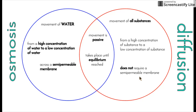Here is a Venn diagram showing the similarities and differences between osmosis and diffusion. Osmosis is the movement of water from a high concentration of water to a low concentration of water across a semi-permeable membrane. Diffusion is the movement of all substances — liquids or gases — from a high concentration to a low concentration, and does not require a semi-permeable membrane. The similarities between the two are that movement is passive, so no energy is needed, and it takes place until equilibrium is reached — meaning the concentration is equal everywhere.